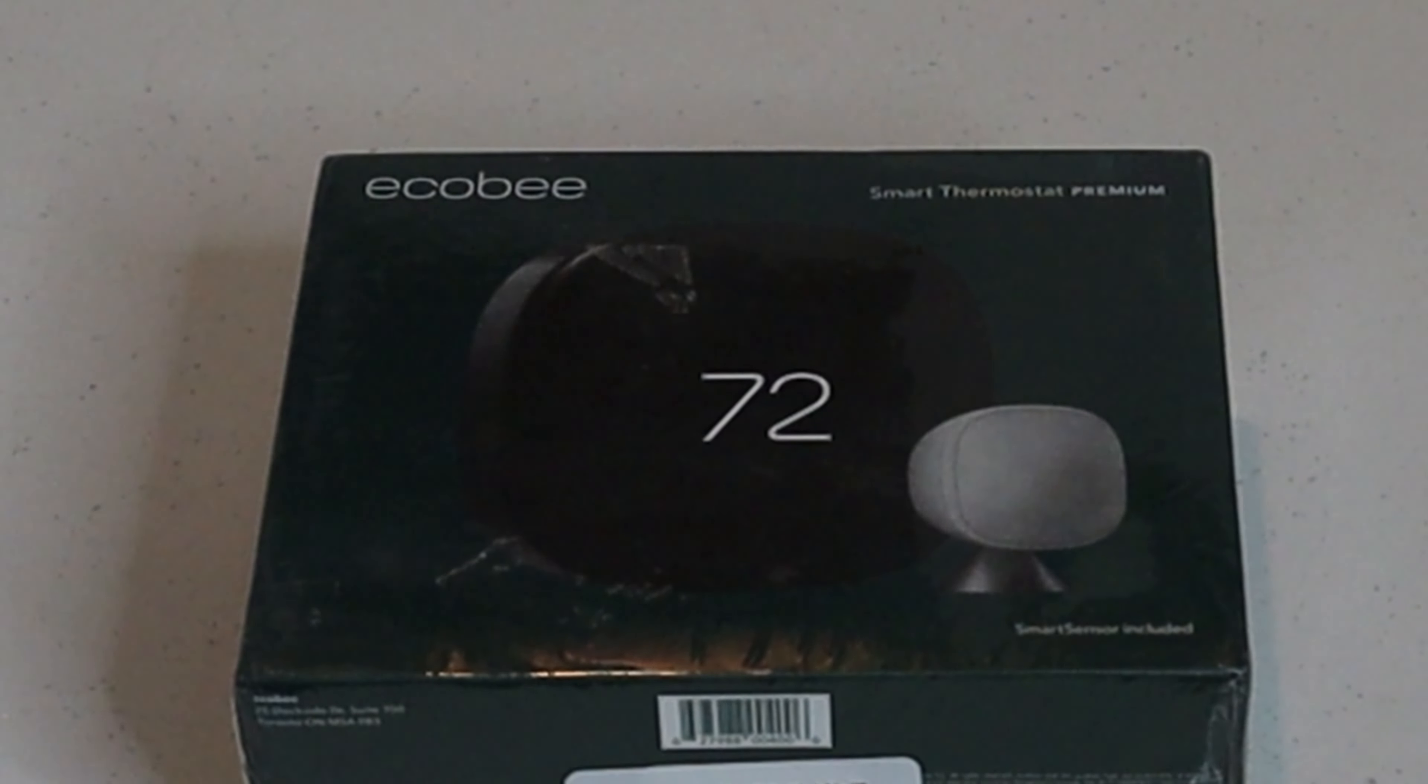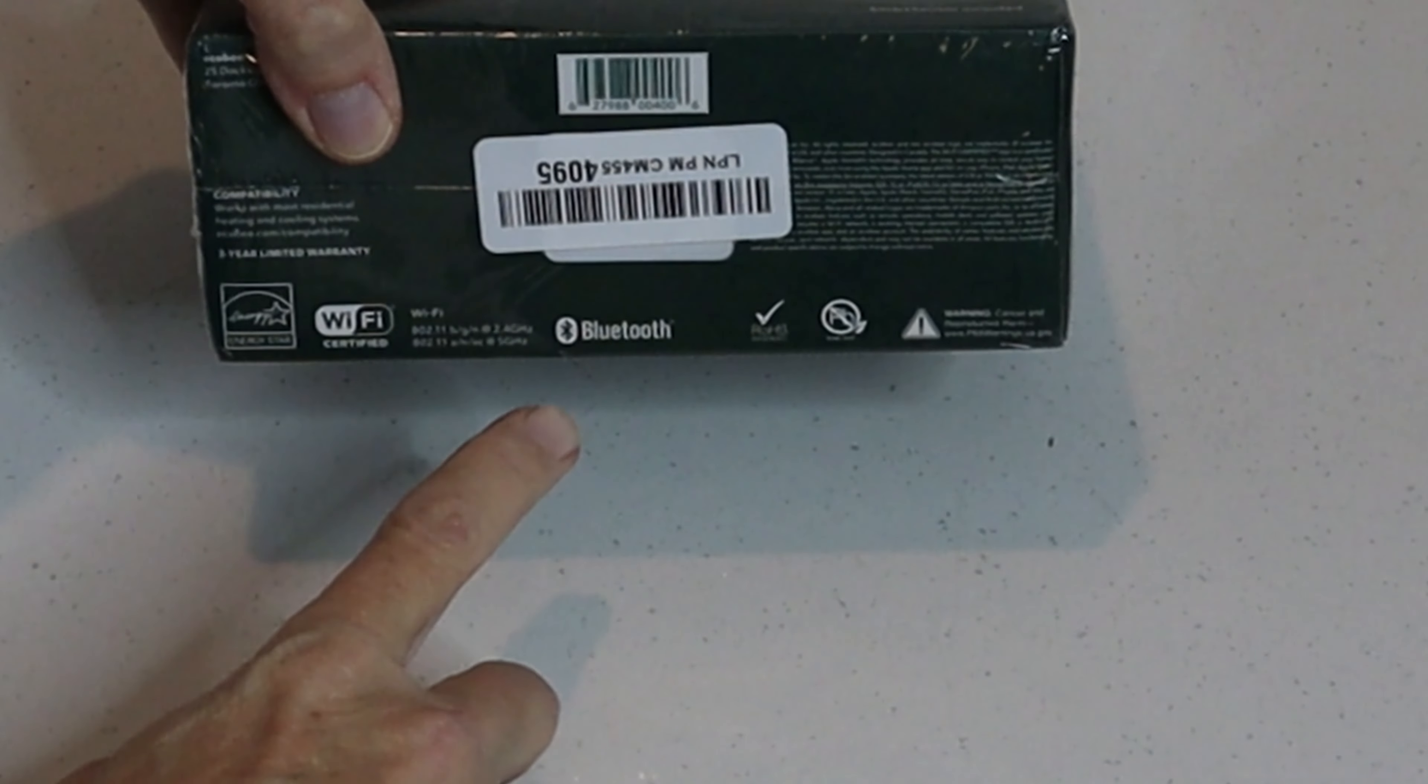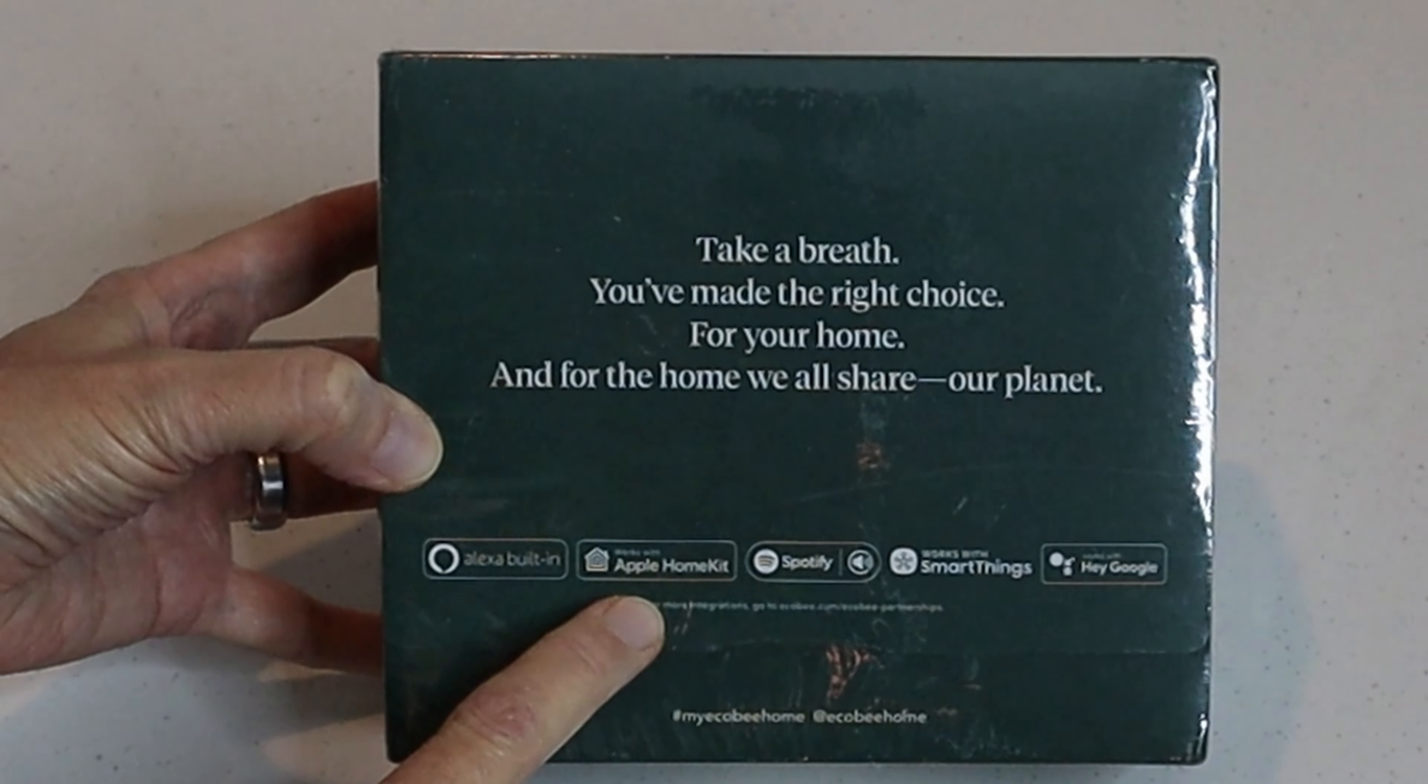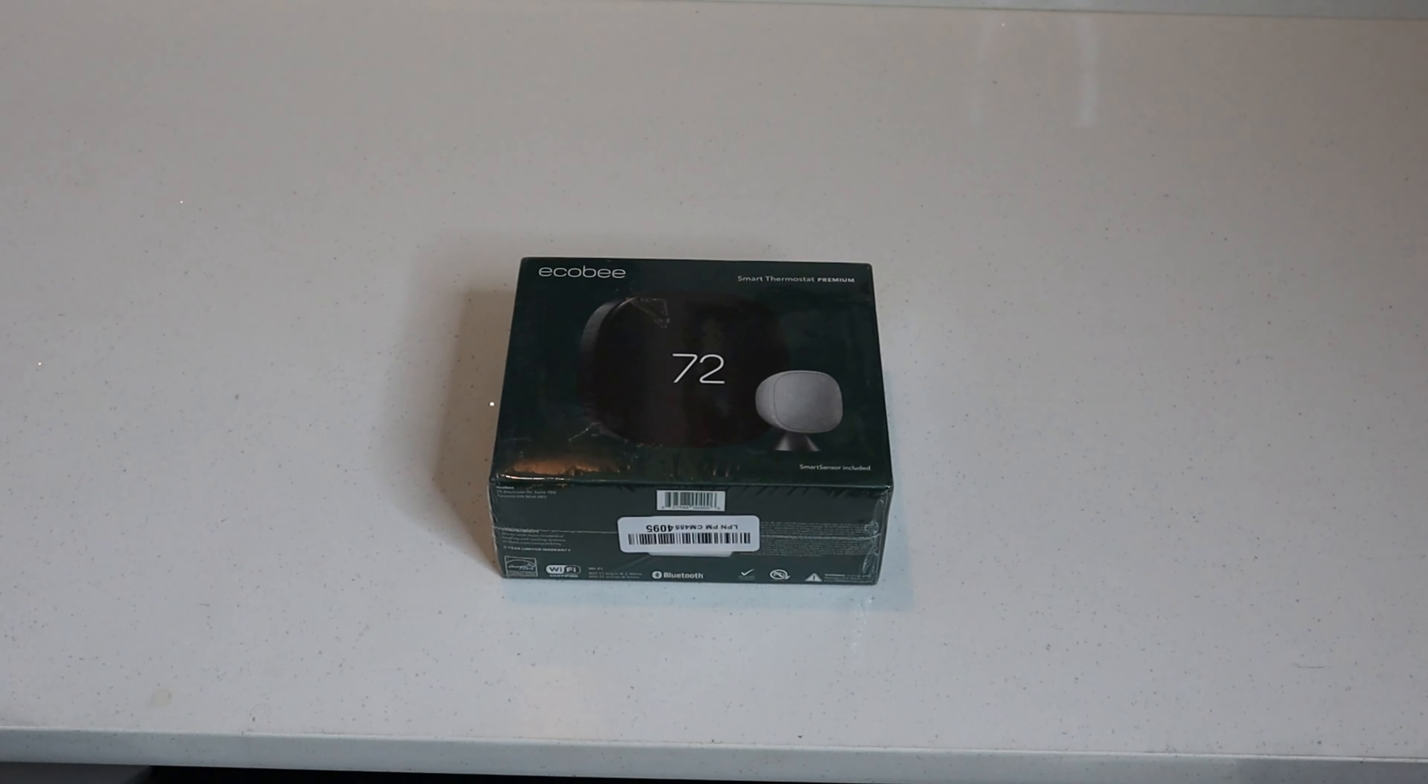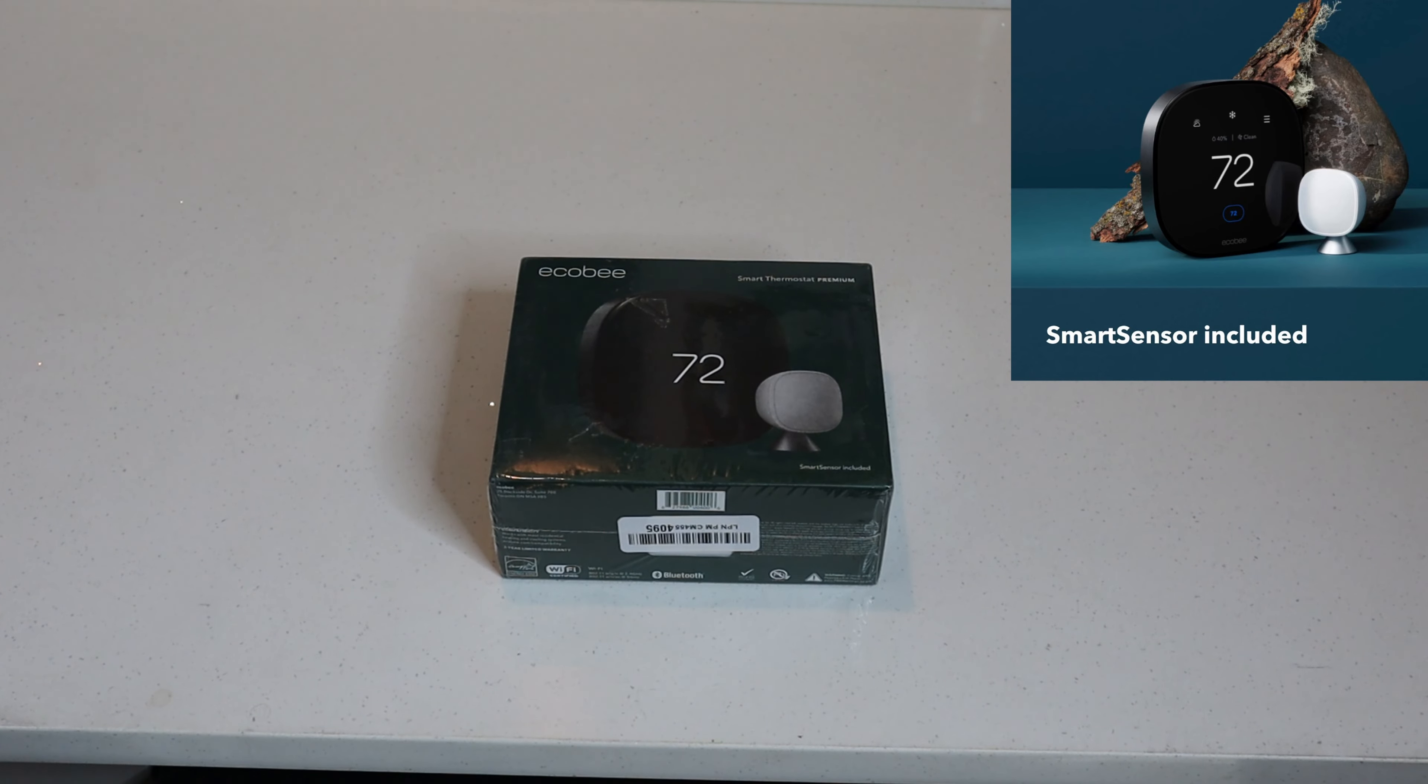Okay, quick look at the box here. The Ecobee Smart Thermostat - this is the premium version. You'll notice it's got Wi-Fi support, Bluetooth, 2.4 gigahertz and 5 gigahertz support. Also, you'll notice on the box we've got support for Alexa, Apple HomeKit, Spotify, SmartThings, and Hey Google. Let's go ahead and open up the box. This is the premium version - it does come with one of the little smart sensors included.